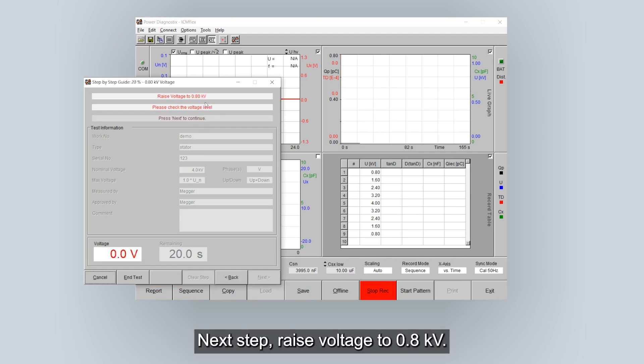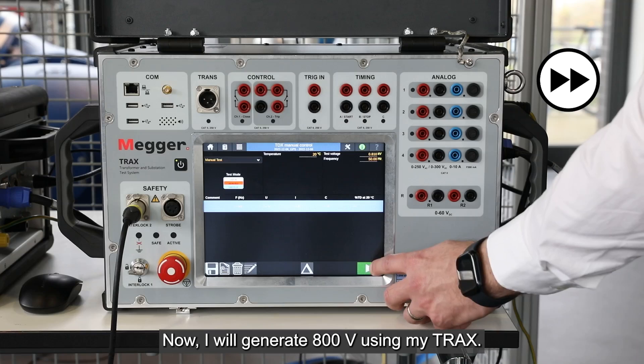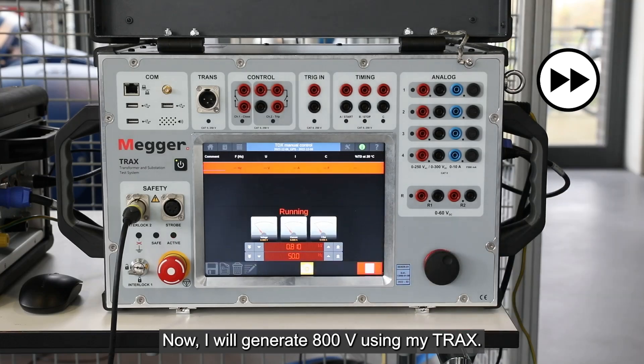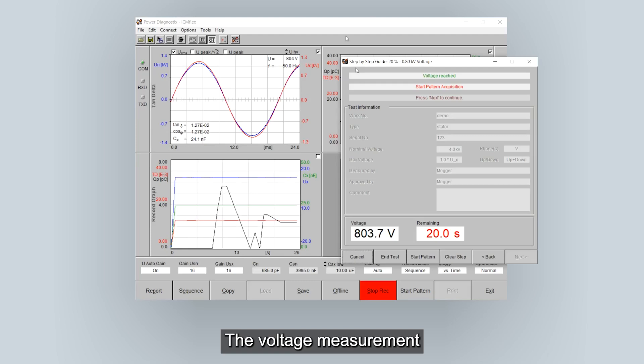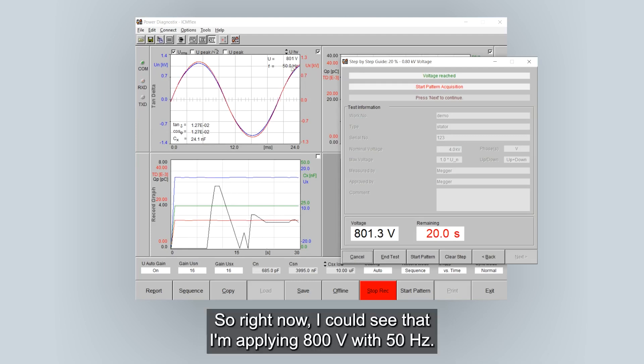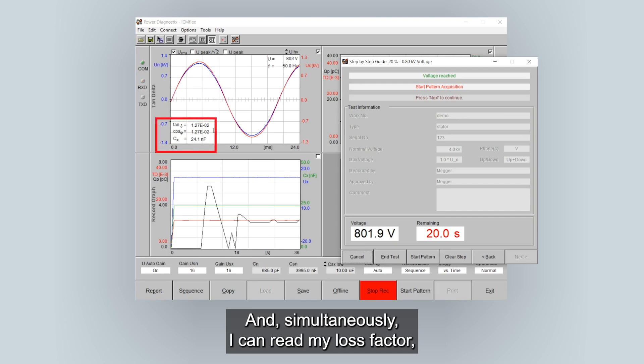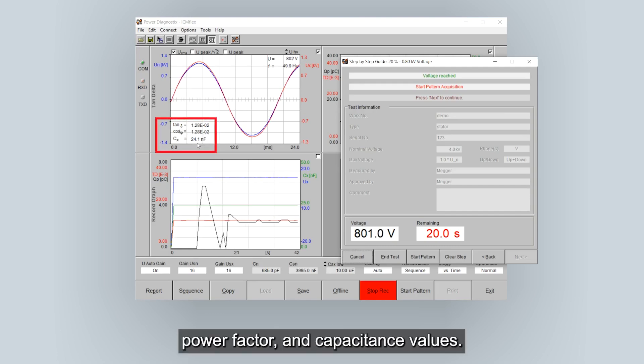Next step, raise voltage to 0.8 kV. Now I will generate 800 volts using my Trax. The voltage measurement path of the ICM Flex is calibrated. So right now I could see that I'm applying 800 volts with 50 hertz and simultaneously I can read my loss factor, power factor and capacitance values.